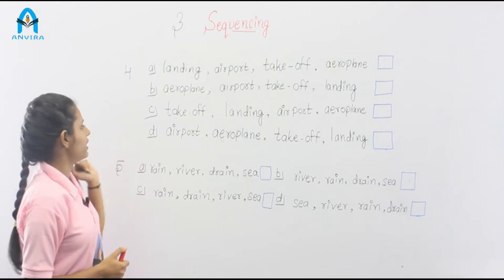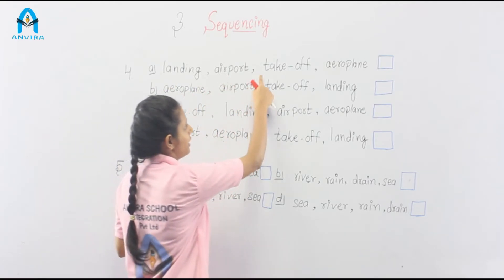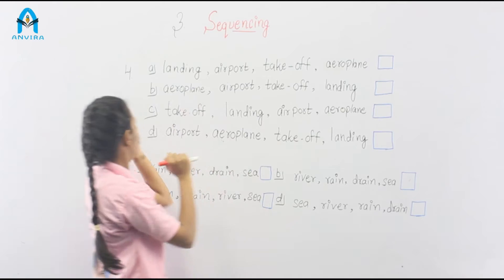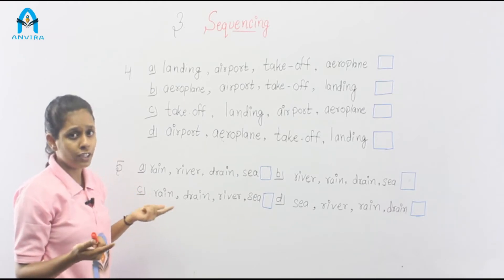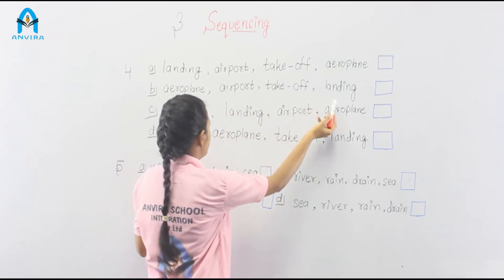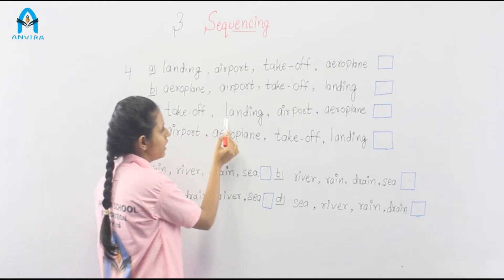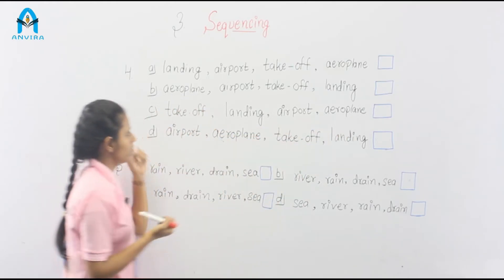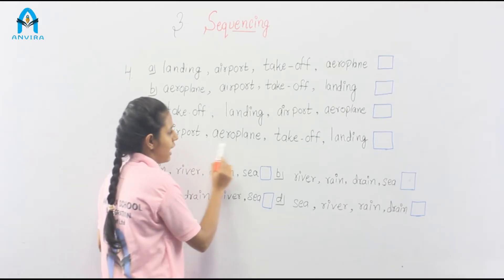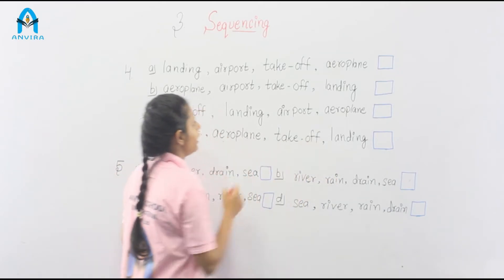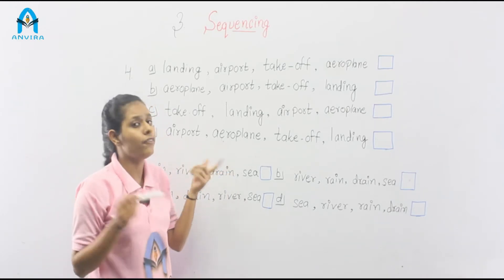Question number 4. Look at option A: landing, airport, takeoff, aeroplane. Option B: aeroplane, airport, takeoff, landing. Option C: takeoff, landing, airport, aeroplane. Option D: airport, aeroplane, takeoff, landing. In all options, all words are the same but they have different sequences.